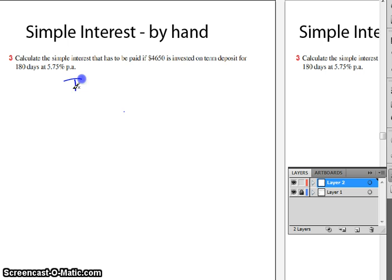And that is I equals PRT over 100. What you need to be familiar with is what all of these little rules stand for. I is the interest that's earned or needs to be paid.